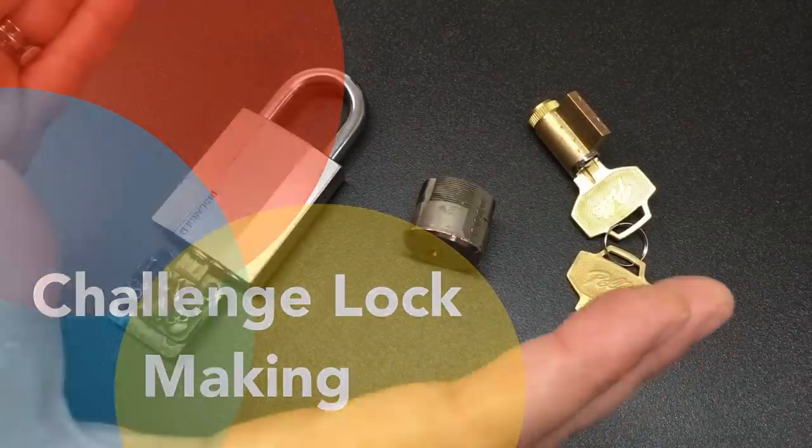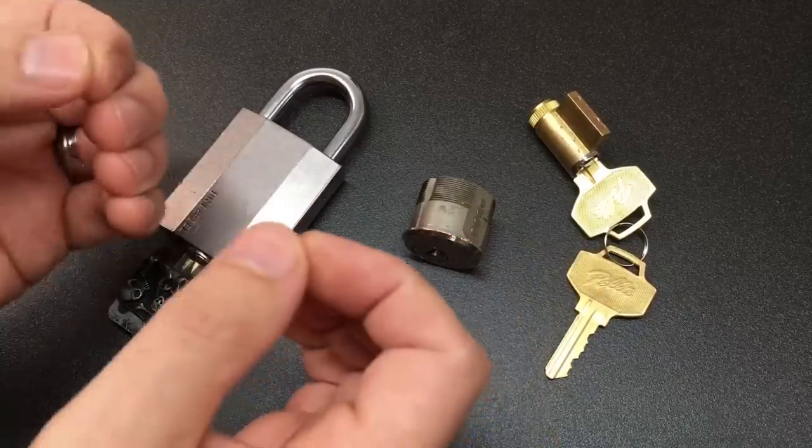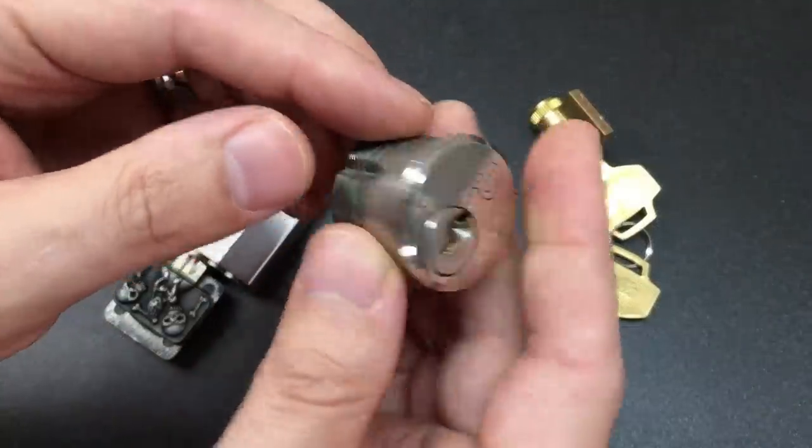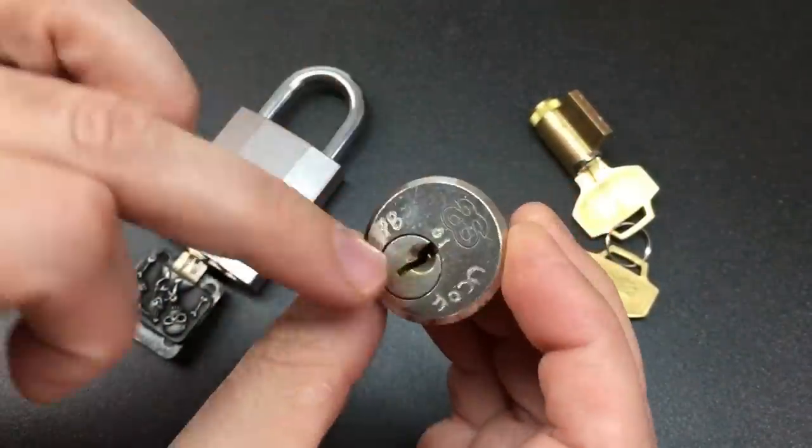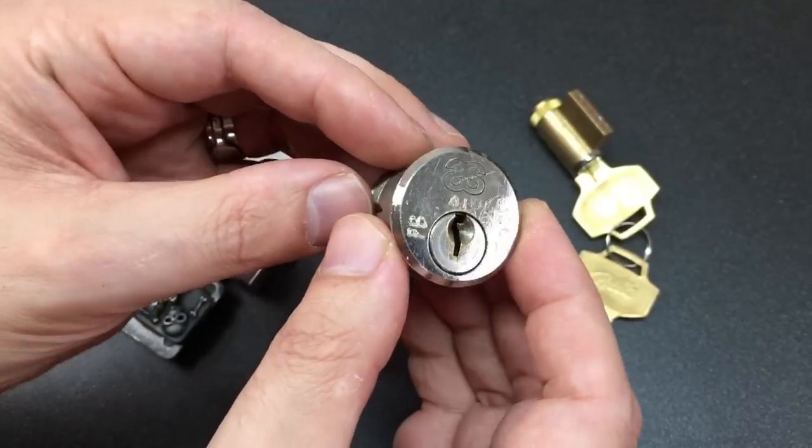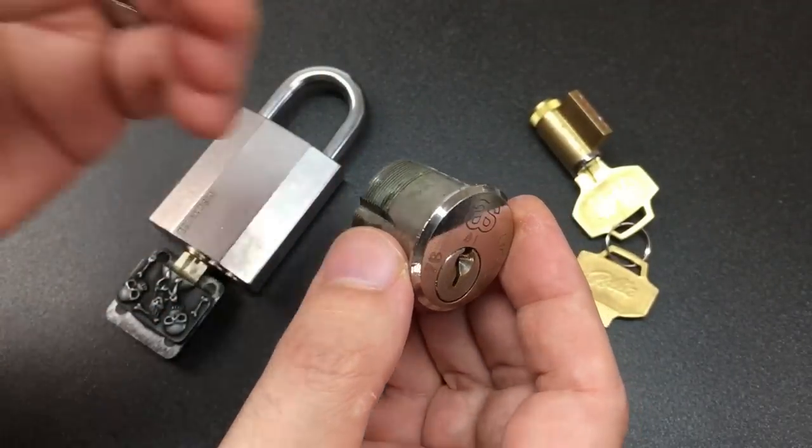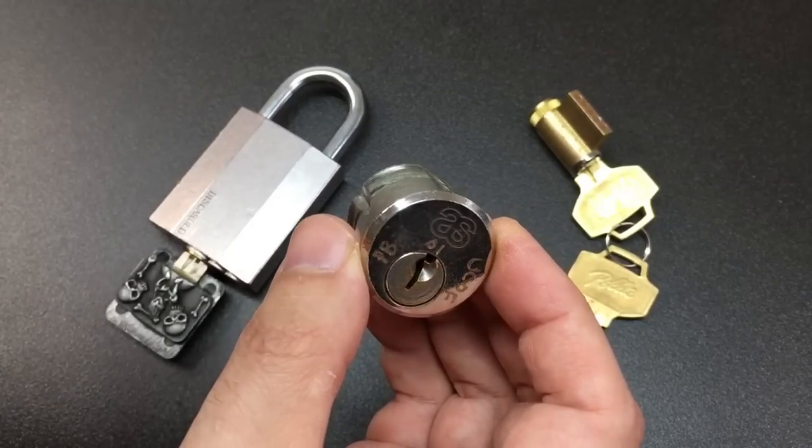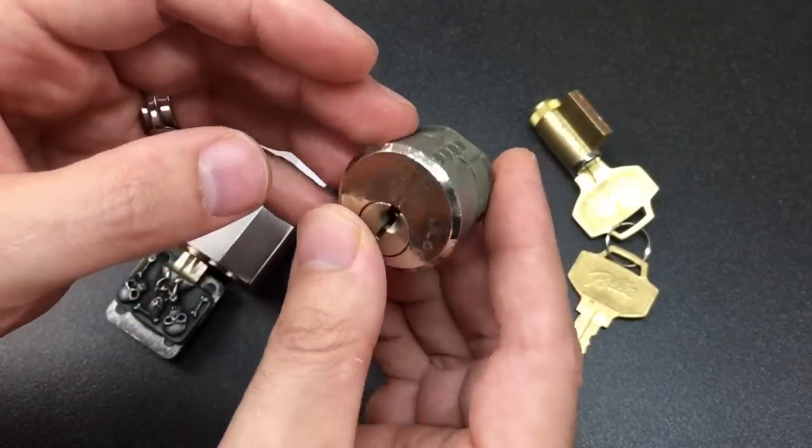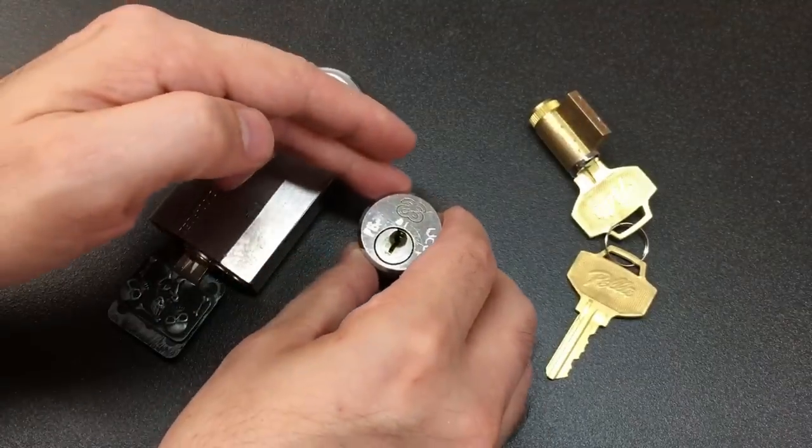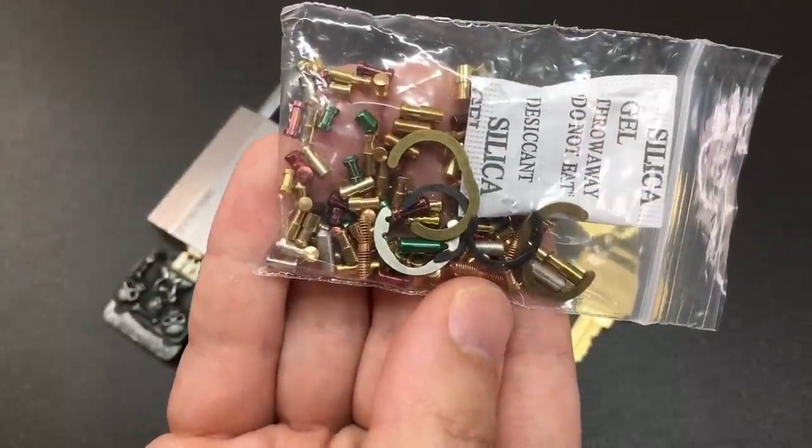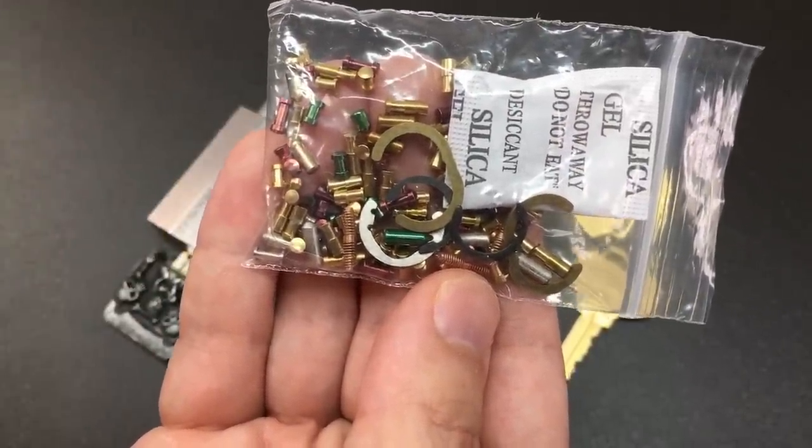One of the biggest parts of the lock sport scene and community is challenge lock making. For those who aren't familiar, the concept of challenge lock is just taking a standard commercial lock, swapping out the pins, maybe the springs, maybe even modifying the insides, the core and the bible, to make a standard commercially available lock trickier or more challenging to pick. Sometimes they are just there for fun and introduce new concepts, sometimes they're there to really challenge another picker or yourself. Honestly, you can do anything with any lock.